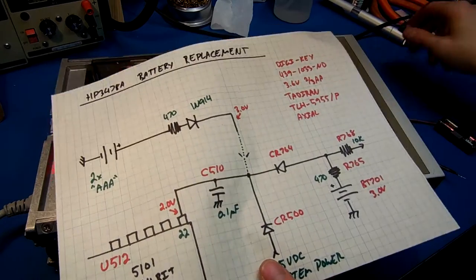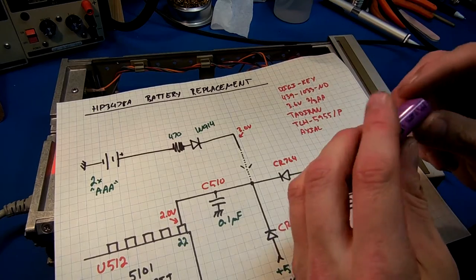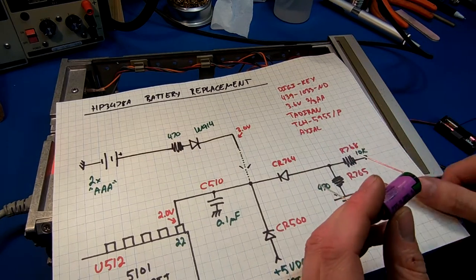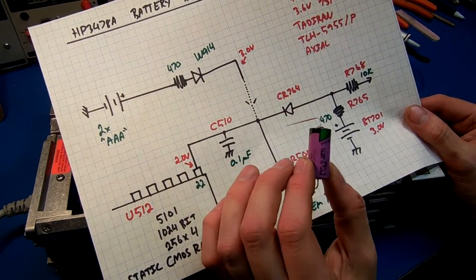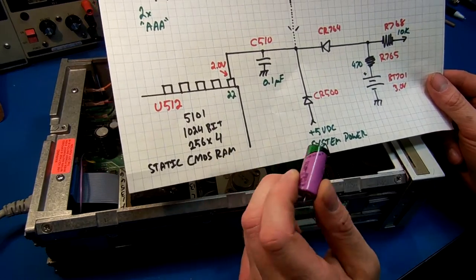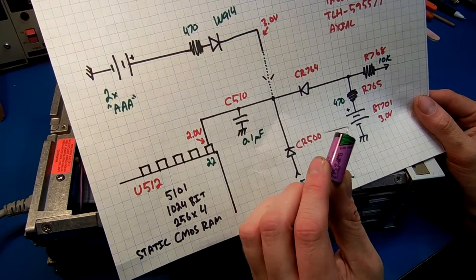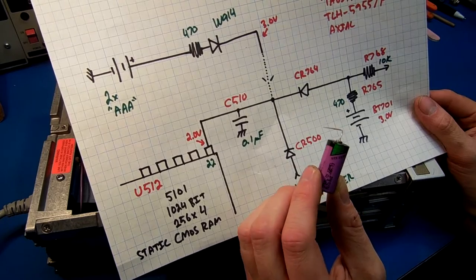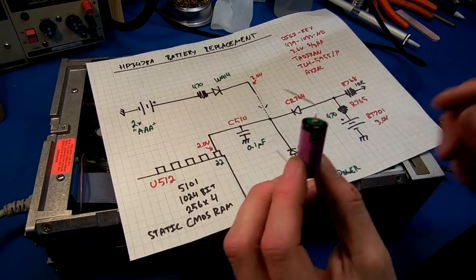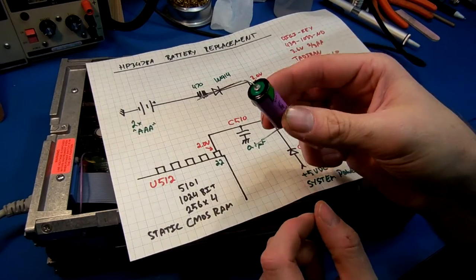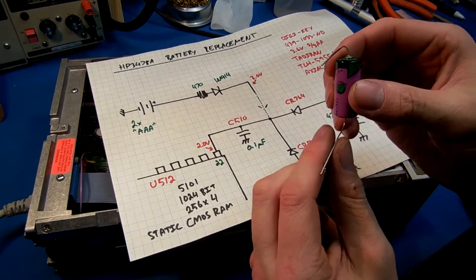The replacement battery we're gonna be using is Tadran TLH-5955-P. Founded at Digi-Key. It's the two-thirds double-A size. It's actually 3.6 volts, so that's okay. Because the CMOS RAM, actually, I think it can go up to like 7 volts. So, a little more voltage is no problem. It's available from Digi-Key, part number 439-1033-ND. Make sure you want to get the axial leads. That means it has leads coming out like that. And make sure you mark your positive. I put a little red marker on the positive lead.